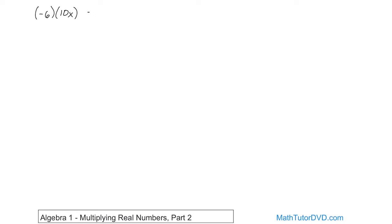In this case, since the signs are opposite — negative and positive — the answer will be negative. When you multiply terms like this, you can't do anything with the x, but you can certainly multiply the numbers together. Six times 10 is 60, so you get 60. Don't forget x has to come along for the ride because it's also being multiplied. It's just that we don't know what x is, so we can't do anything further. The answer in this case is negative 60x.